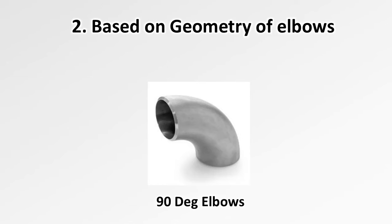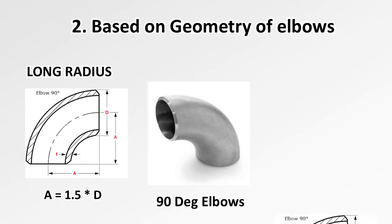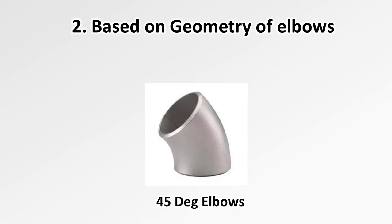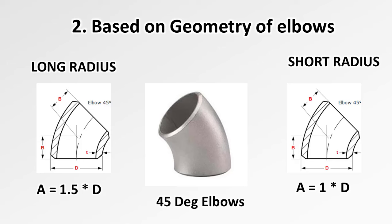The second classification of elbows is based on geometry. We have two types: long radius and short radius. The difference between long radius and short radius is that dimension A for a long radius elbow is 1.5 times the diameter, while for a short radius it is 1 times the diameter. This applies to both 90-degree and 45-degree elbows. For dimension A reference, you can refer to the 90-degree elbow diagram.